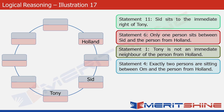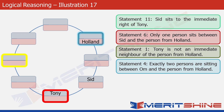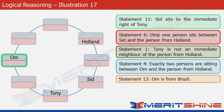Statement 4 says exactly two persons sit between Ohm and the person from Holland. With Holland's position established, the two possible positions for Ohm are highlighted in yellow. However, one of them is already occupied by Tony, so that is ruled out, and the box highlighted in green becomes Ohm's only possibility. Statement 13 then tells us Ohm is from Brazil, so we place Brazil in that box.